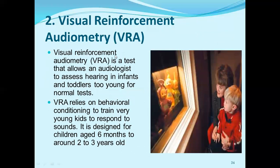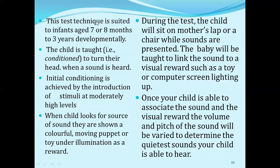Visual Response Audiometry (VRA) allows the audiologist to assess hearing in infants and toddlers who are too young to respond in other ways. It is designed for children aged 6 months to around 2 to 3 years old. The technique is suited to infants aged 7 or 8 months to 3 years developmentally. The child is conditioned to turn their head when a sound is heard. An initial condition is achieved by introducing stimuli at moderately high levels, and when the child looks toward the source of sound, they are shown a colorful moving puppet or toy as a reward.